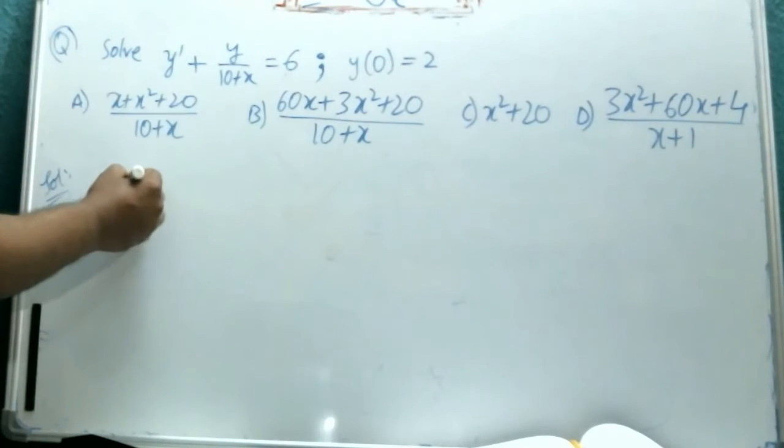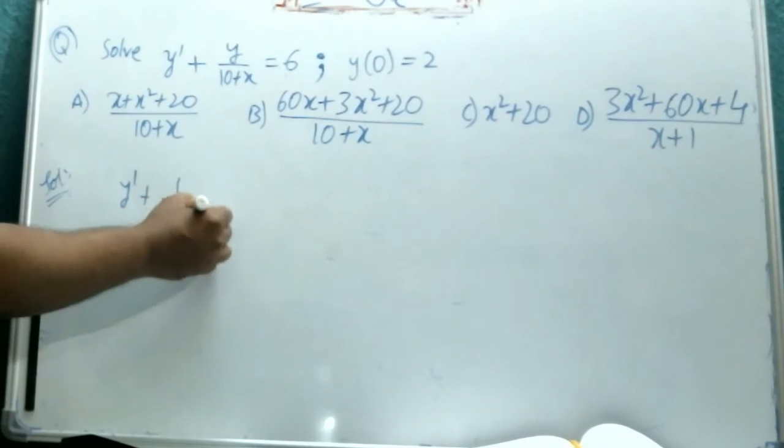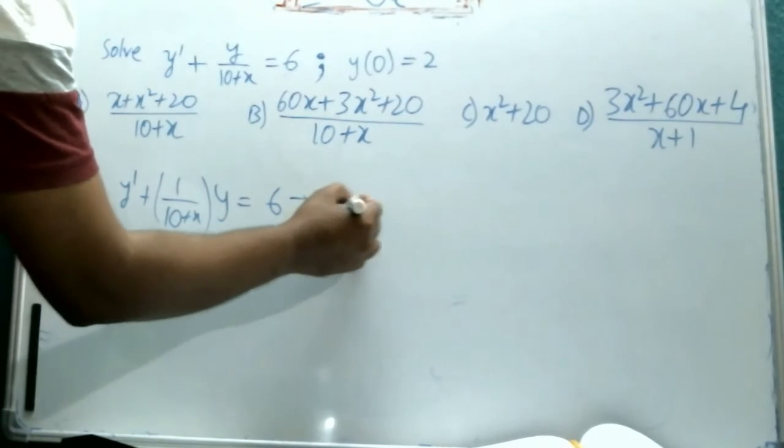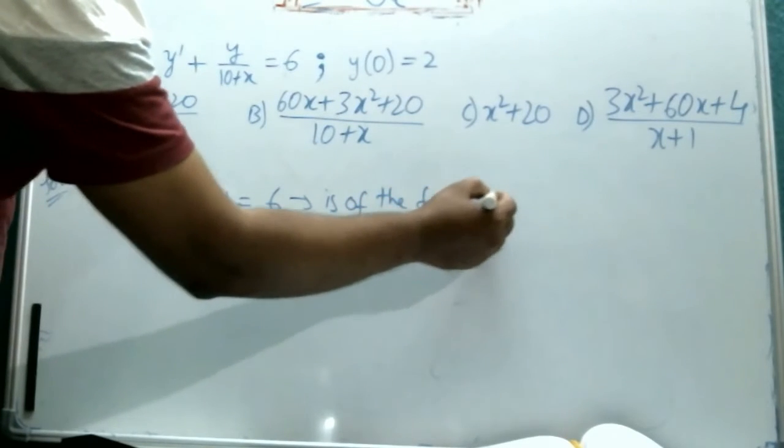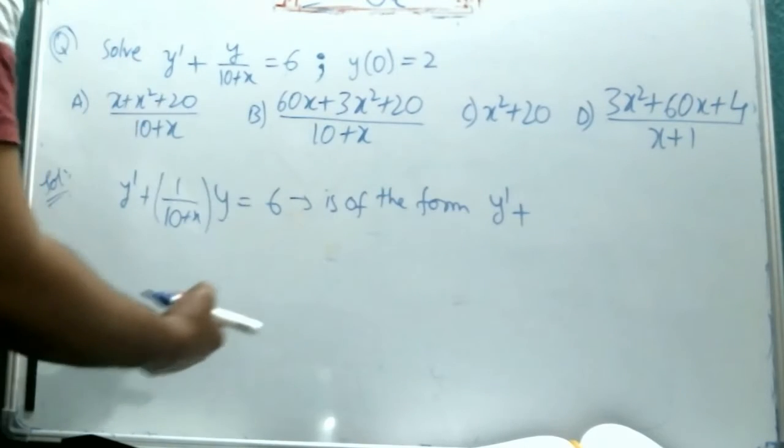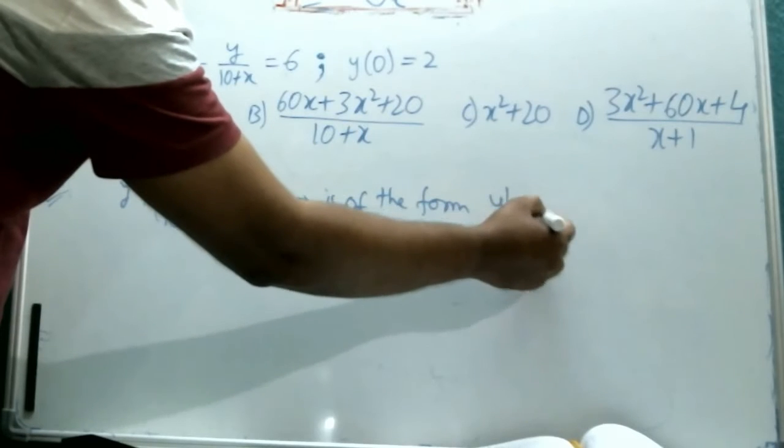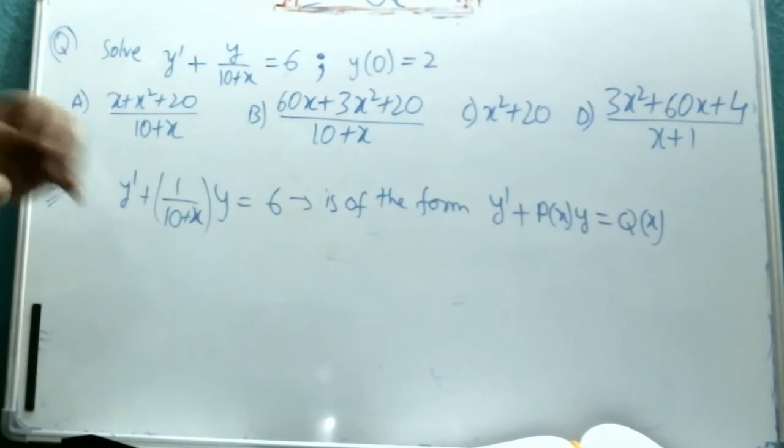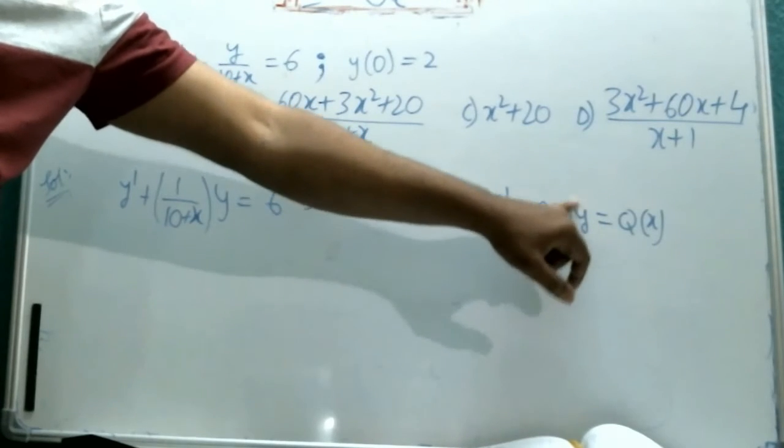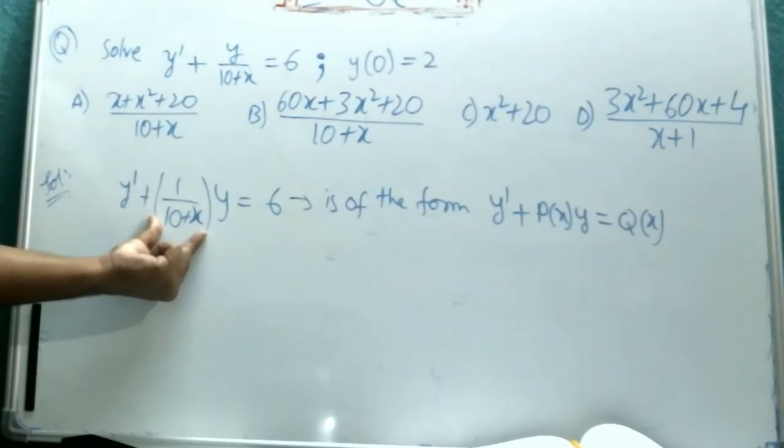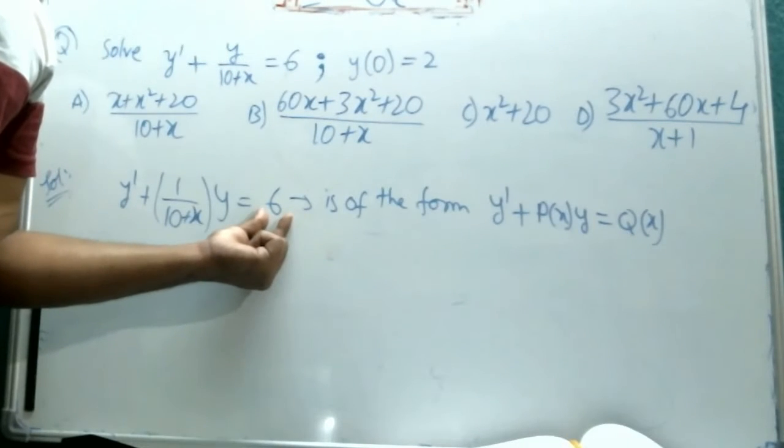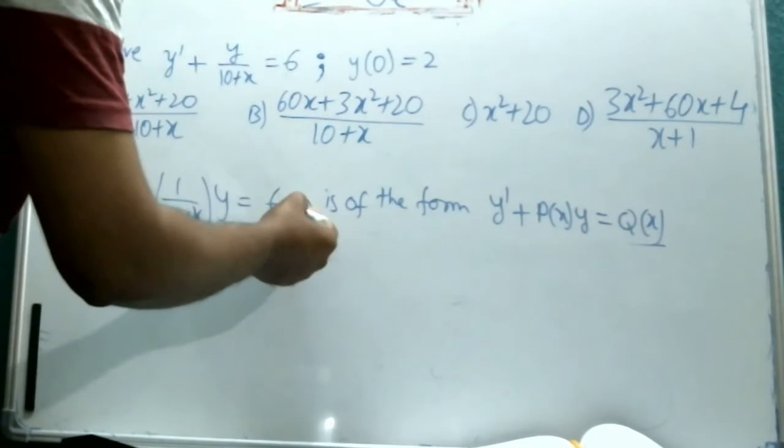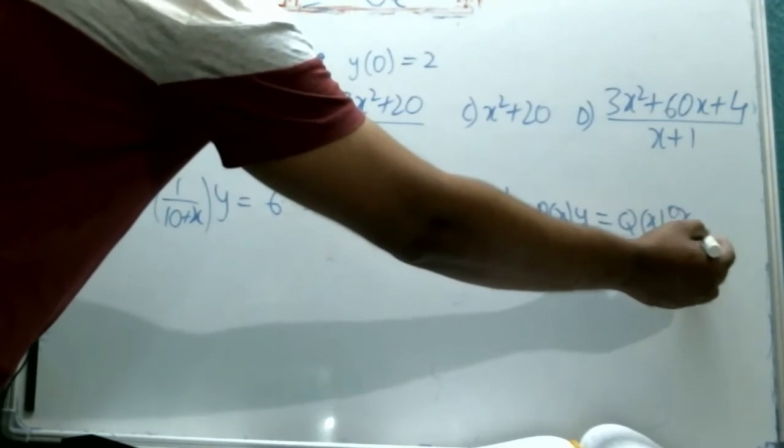For such problems where they are of the form y dash plus 1 by 10 plus x of y equal to 6, this is of the form dy by dx, we are calling it as y dash, plus p of x of y equal to q of x. That means y dash plus p into y. This p of x is a function in x. Here for us p of x is 1 by 10 plus x. And q of x is a function in x where x power 0, that means constant function. It can be either some value containing x or it can be constant.